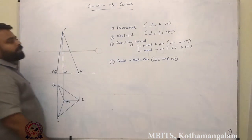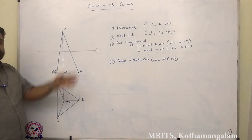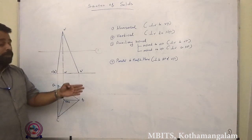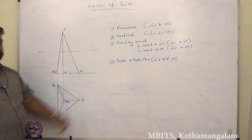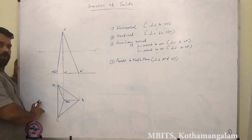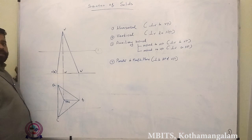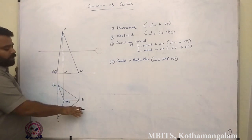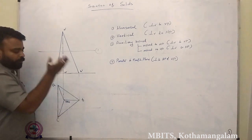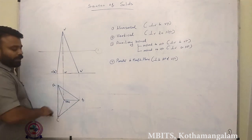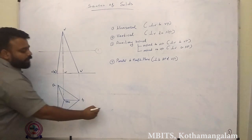The second condition is a vertical section plane — a section plane that is perpendicular to HP and parallel to VP. In that case the section plane will be viewed in the top view only. If we draw a section plane like this, it means the section plane is parallel to VP and perpendicular to HP, so in the top view it can be seen as a straight line.